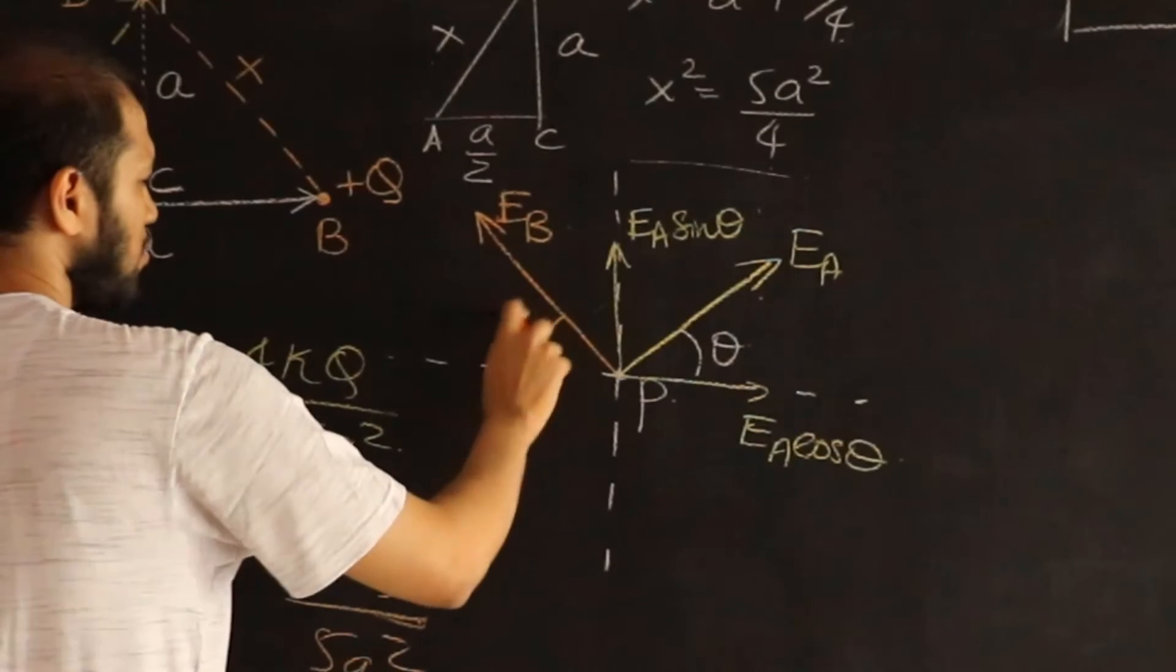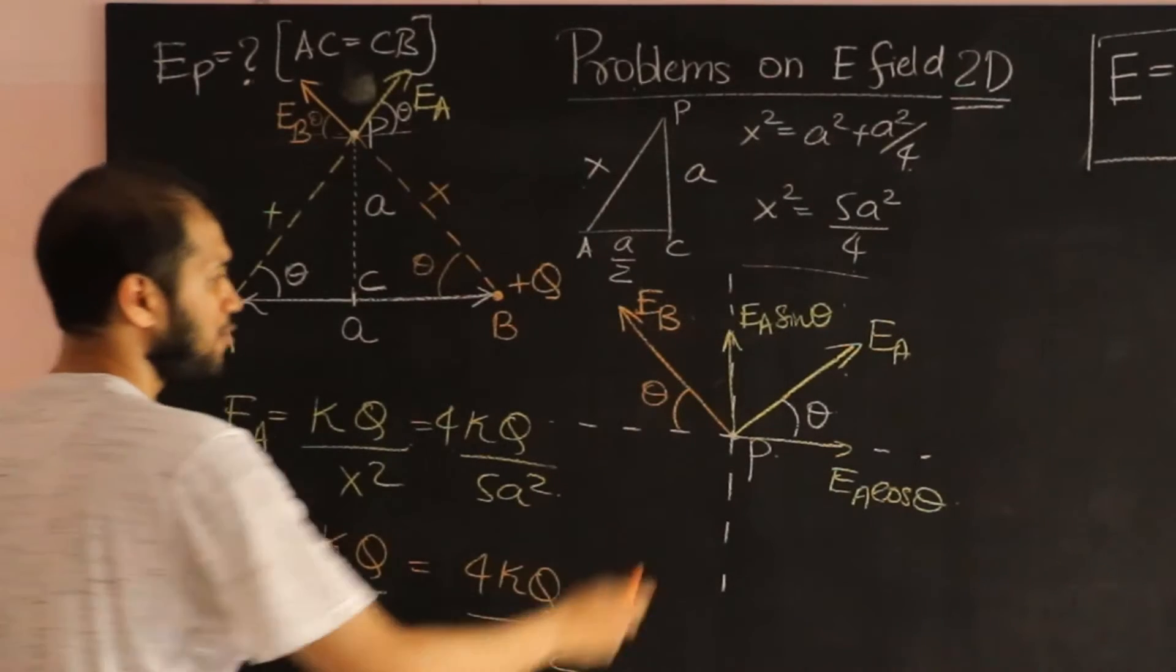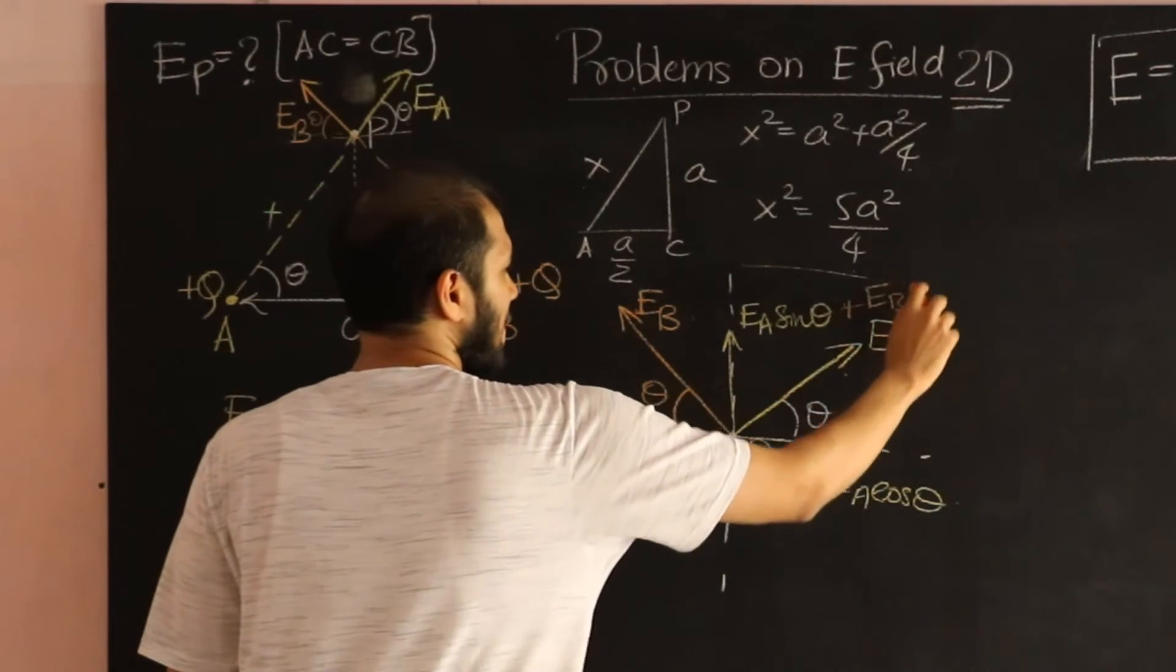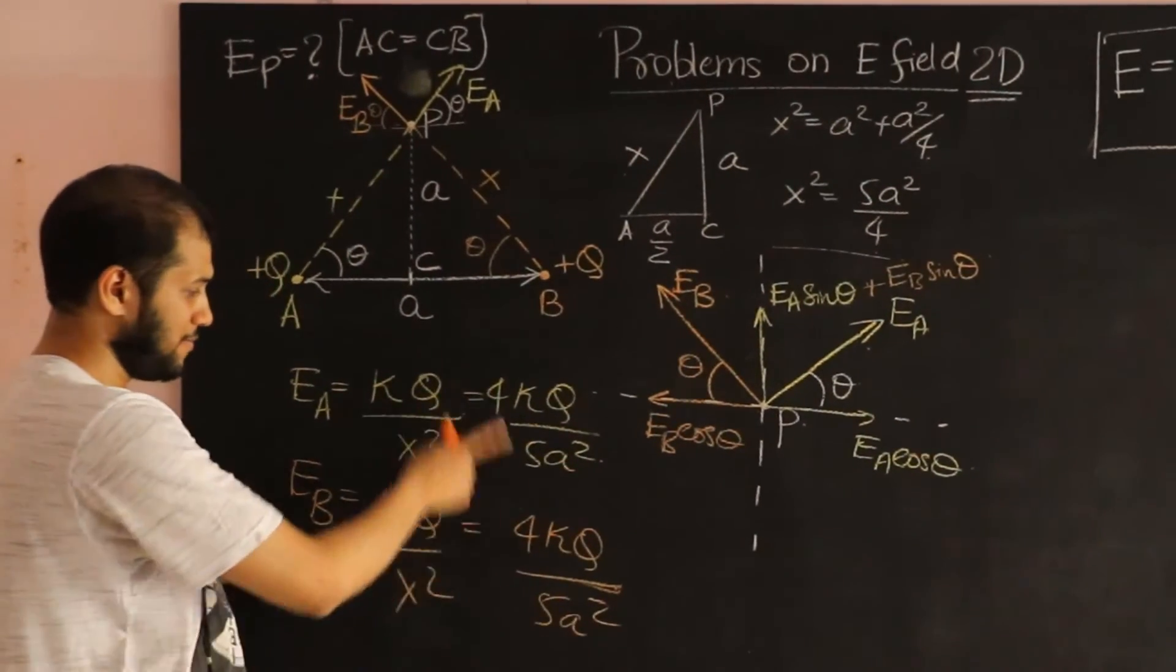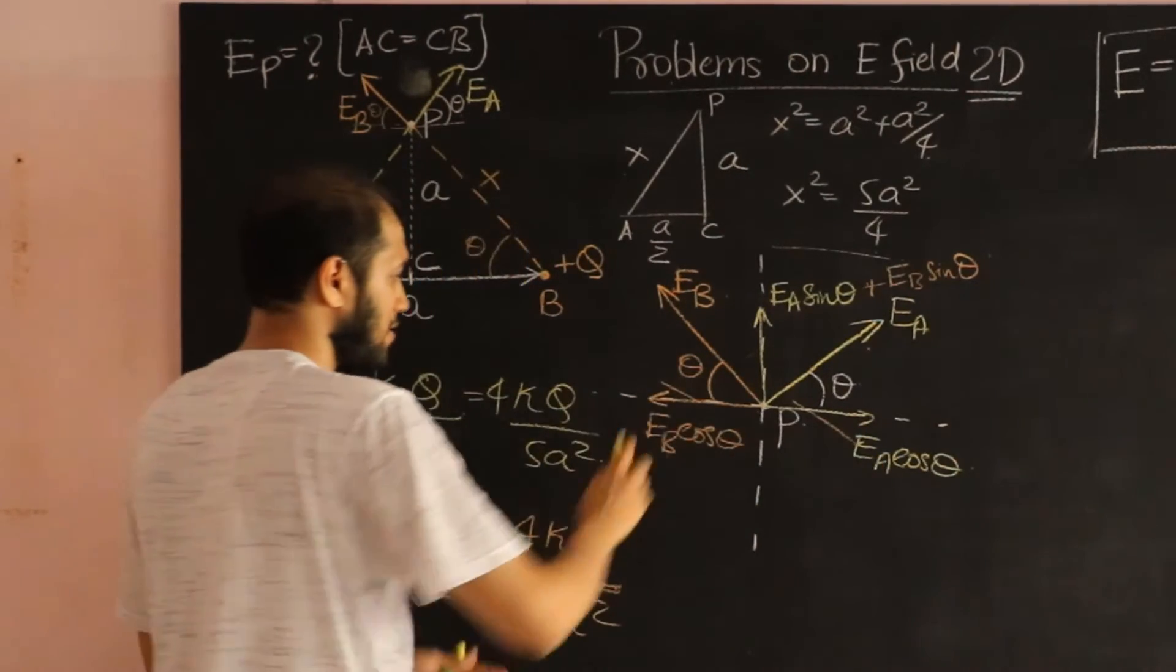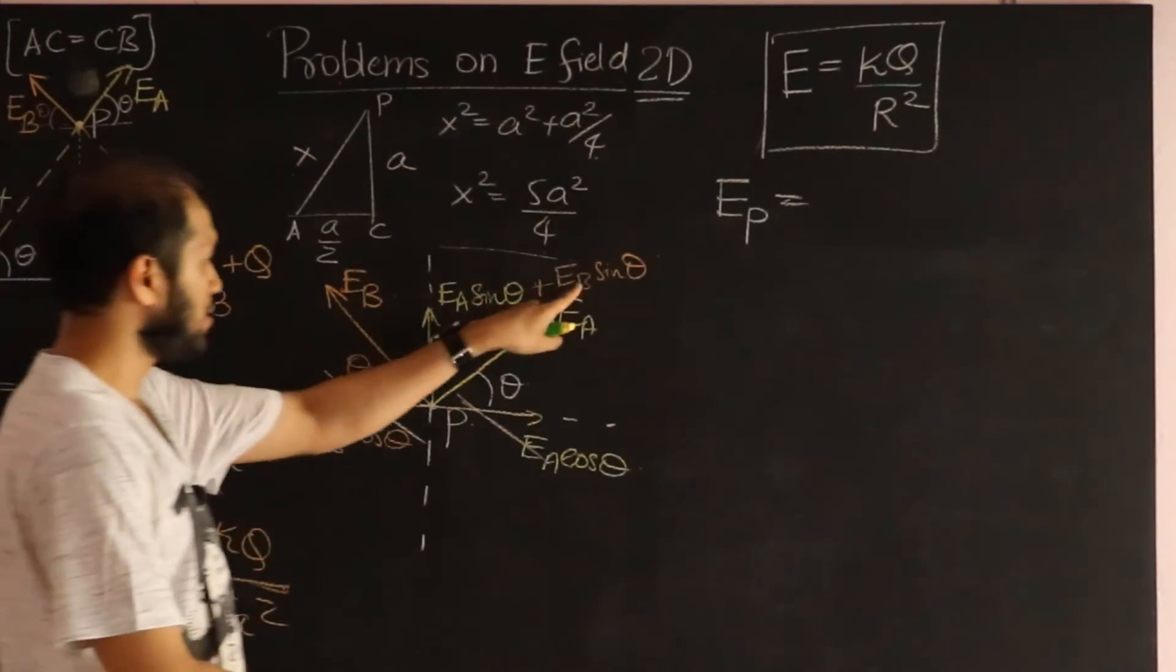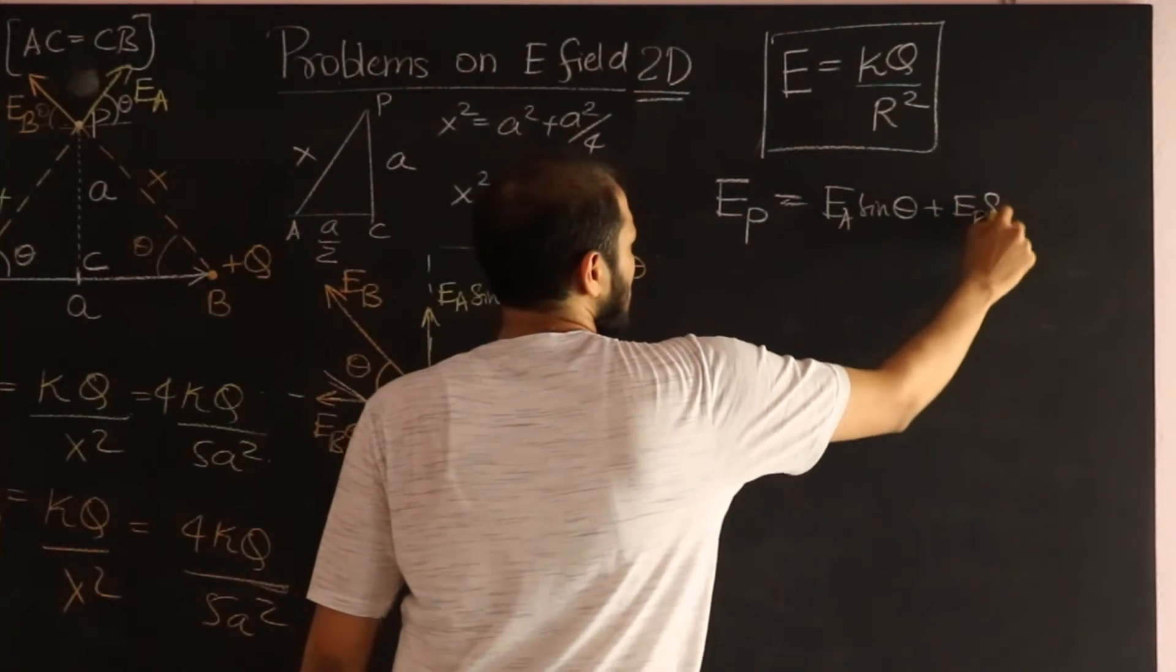Similarly, this angle should also be theta. Everything is symmetric, because this angle is also theta. And therefore, when you take a component here, you get EB cos theta. And you get an EB sin theta. Notice, we already saw EA and EB are equal to each other in magnitude. And therefore, these two guys cancel out. So, the net field, right there over here, at point P has to be upwards.